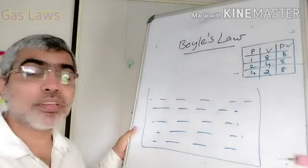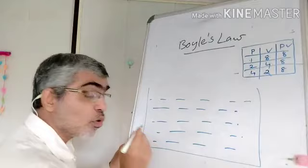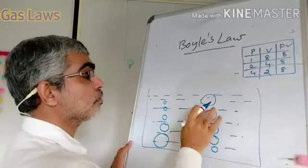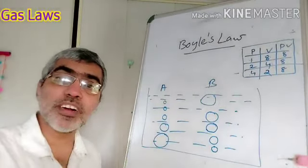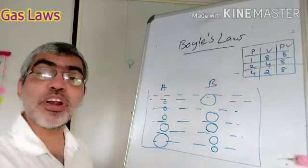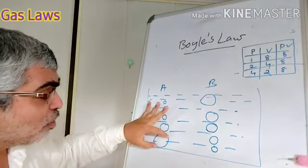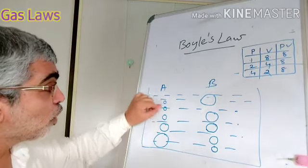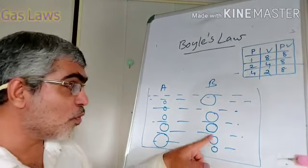There is an application of Boyle's Law: consider bubbles rising. Bubbles come from the bottom and rise to the surface. As the bubbles rise, the pressure on them decreases, so their volume increases.